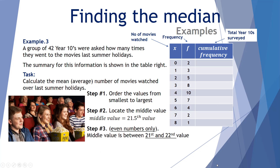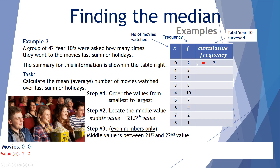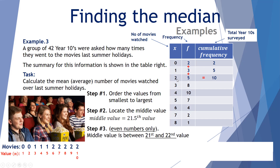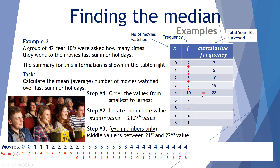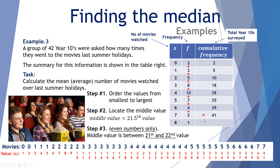Two students went zero times — cumulative frequency: 2. Three went once, giving 5. Five went twice, giving 10. Eight went three times, giving 18. Ten went four times, giving 28. Seven went five times, giving 35. Four went six times, giving 39. Two went seven times, giving 41. One went eight times, totalling 42 students.